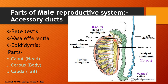From the rete testis, fine tubules arise which pass out of the testis and join the epididymis. These tubules are known as the vasa efferentia. The vasa efferentia carry the sperms from the testis to the epididymis. The epididymis is a curved C-shaped part covering the testis posteriorly. It is the place where sperms are stored and undergo maturation. The epididymis can be divided into three parts: the head known as the caput epididymis, the body known as the corpus epididymis, and the tail known as the cauda epididymis.